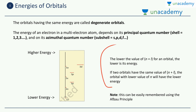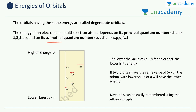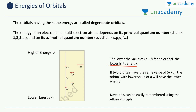This is known as the n plus l rule. Lower the value of n plus l of an orbital, lower is its energy. n is the principal quantum number and l is the azimuthal quantum number. You just need to calculate the n plus l values for all the orbitals, and whenever n plus l is lower, the energy of that orbital is also lower.